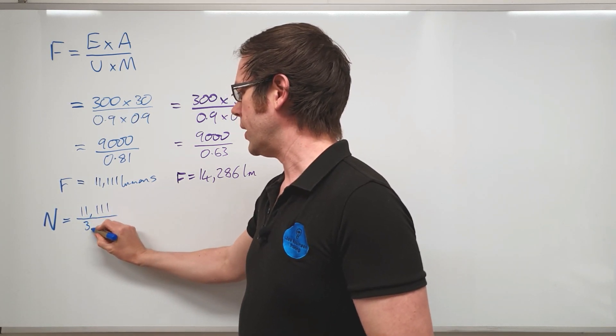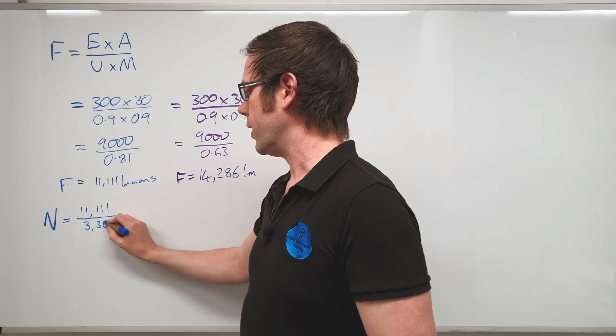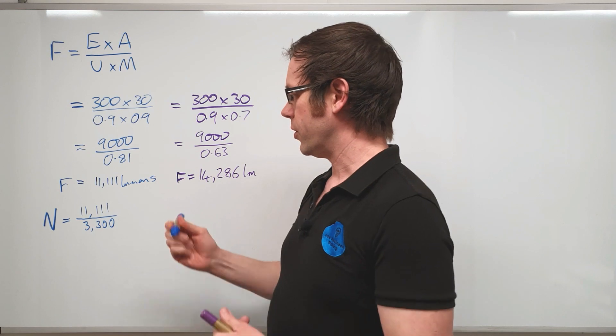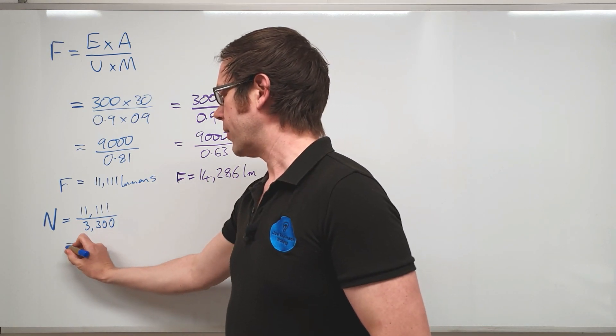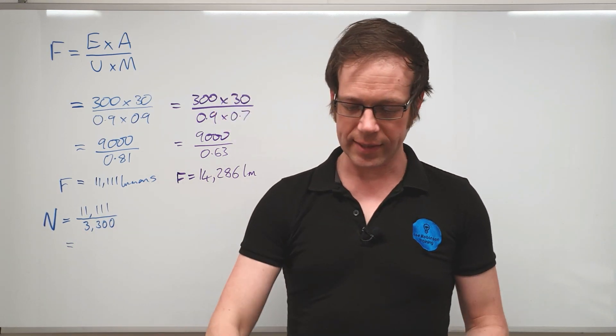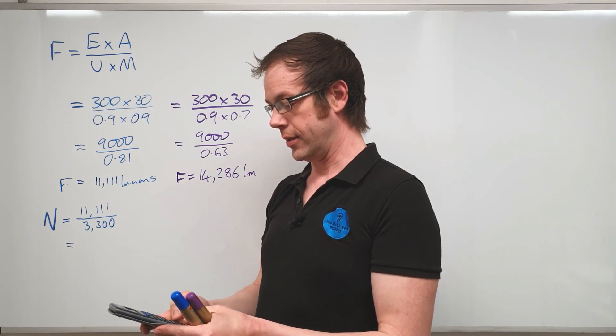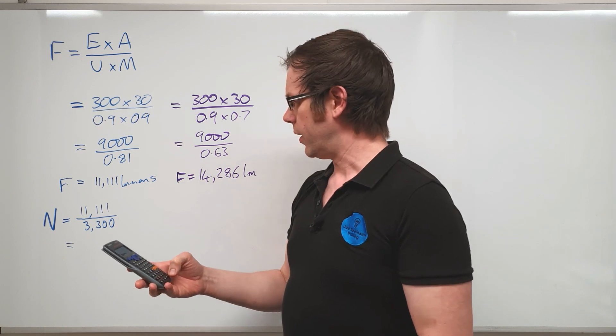So let me show you what I mean. We're trying to find what is often given the letter N as a capital for number of fittings. All we've got to do is take our required lumen level of 11,111 and divide it by the lumen output of the light fitting.